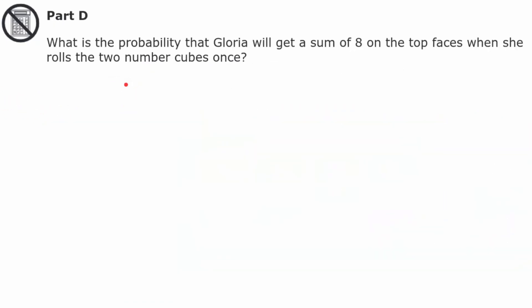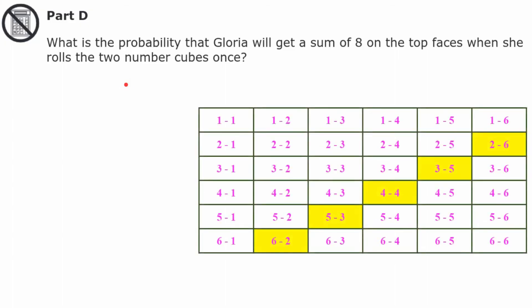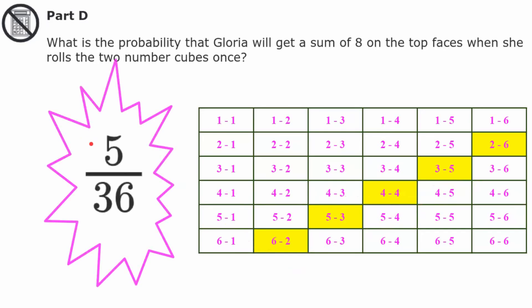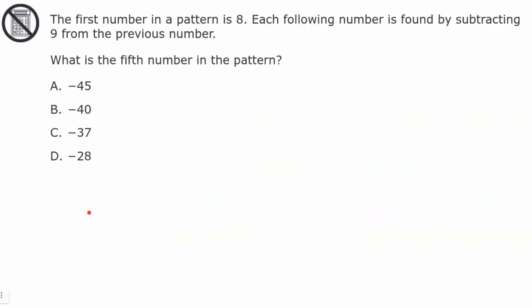Part D, what is the probability that Gloria will get a sum of 8 on the top faces when she rolls the two number cubes once? Pause now and come back when you're ready. Welcome back. So I'm going back to my sample space and my highlighted sums of 8. So my probability is 1, 2, 3, 4, 5 out of my 36 outcomes would be a sum of 8. So Gloria has a 5 out of 36 chance of rolling an 8 when she rolls two number cubes. This is in simplest form so I'm good. Remember you have to simplify your probability ratios.